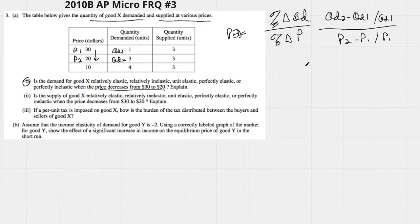So now we're just going to plug in the numbers. QD2 was 3 minus 1 divided by 1 over P2 was 20. 20 minus 30 divided by 30.